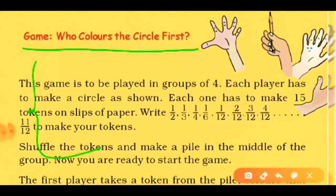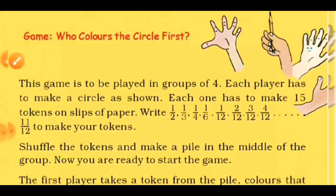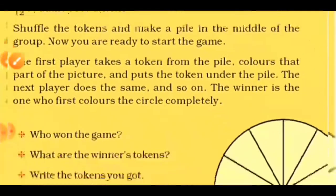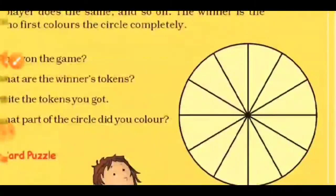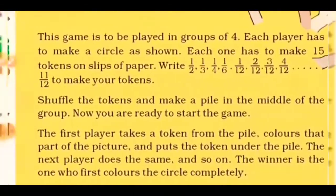Let me explain how to play this game. Only four children can play. They will make a circle and divide it into 12 equal parts. As you can see in the picture, this circle is divided into 12 parts.